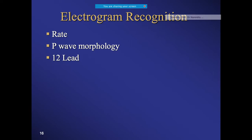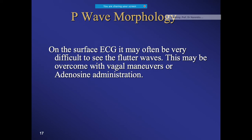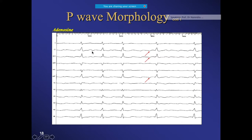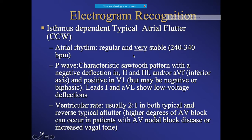To recognize atrial flutter on ECG, focus on the rate, P-wave morphology, and 12-lead ECG changes. On the surface ECG, performing a vagal maneuver or administering adenosine makes the flutter waves more prominent. In counterclockwise typical flutter, the rate is very stable and regular.